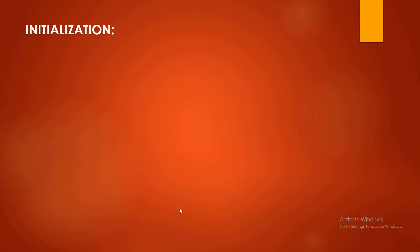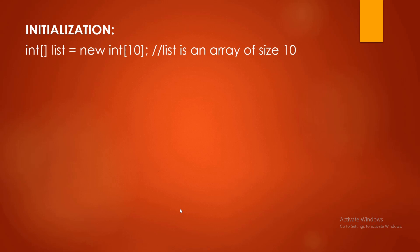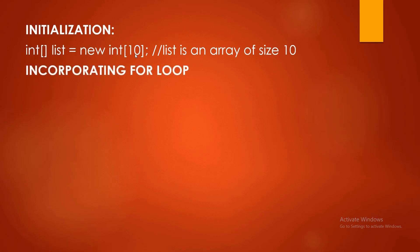Now let us proceed to the different samples of the one-dimensional array. First, initialization: int[] list = new int[10]; — this creates an integer array named 'list' with a size of 10. The comment on the side notes that 'list is an array of size 10'. To determine the size, we will use the function .length later on. So we initialized a list array with a size of 10.